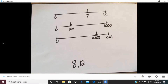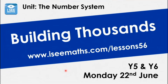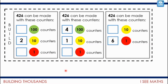That understanding of place value is what this week is all about, with lots of problem solving too. Today's task is called 'Building Thousands' — we're going to look at how numbers are constructed and the different ways that can be done, leading into finding different possible answers. As a warm-up, have a look at this task: it's looking at different ways that 426 can be made with counters. Pause the video and have a go.